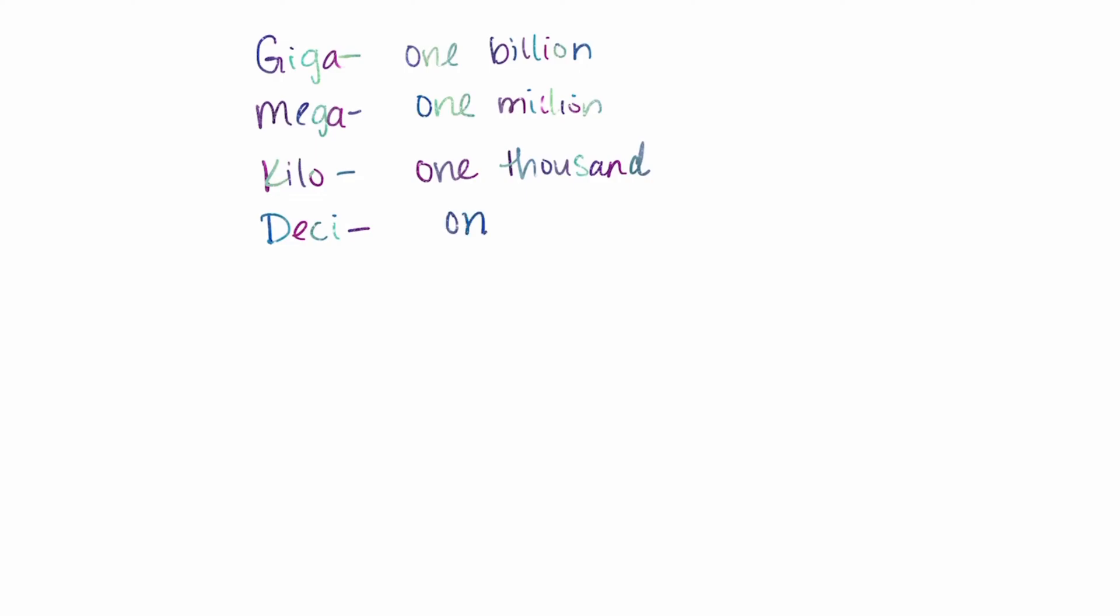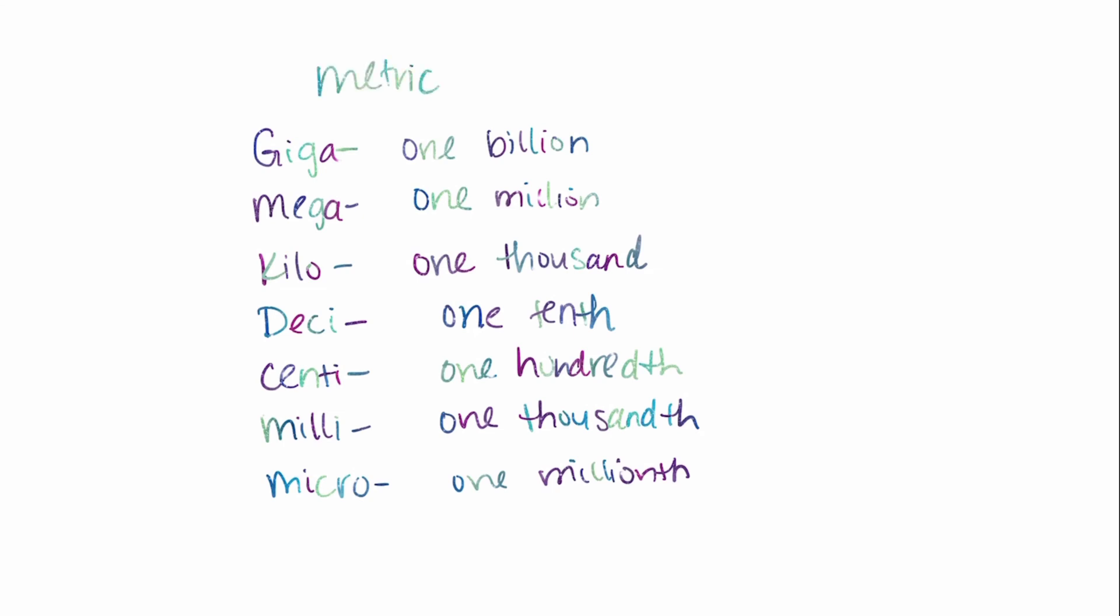Deci means one tenth. So it does not mean 10. It means one tenth, a fraction. For example, if you see decimeter, that would mean one tenth of a meter. Centi means one hundredth. Milli means one thousandth. For example, like milliliter would mean one thousandth of a liter. And then micro means one millionth. So like a microgram, which means one millionth of a gram. So if you know these important prefixes, these would be in the metric system, metric prefixes. If you know and memorize these, these will also give you very important conversion factors when you're working with conversions.